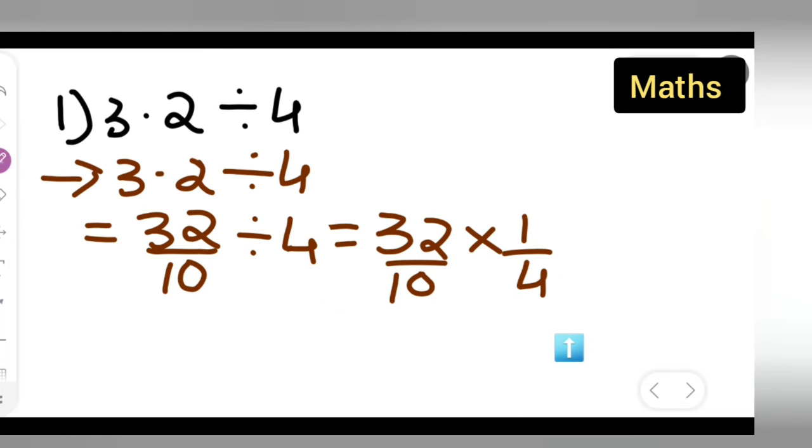Now, 4 goes into 32 eight times. So you will get 8 upon 10, which is equal to nothing but 0.8 is your answer.